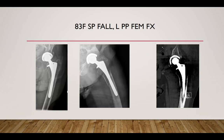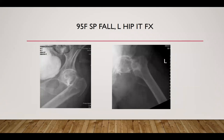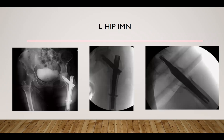Good morning. First patient is an 83-year-old female, status post fall with a left femur periprosthetic fracture, Vancouver B1. Patient was taken to the OR for left femur open reduction and internal fixation. Next patient is a 95-year-old female, status post fall with a left hip fracture. Patient was taken to the OR for left hip intramedullary nailing.